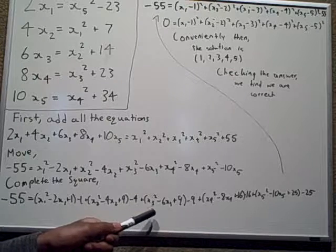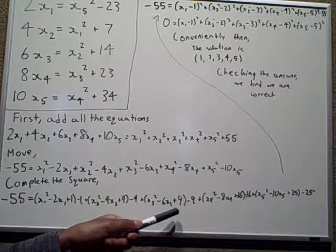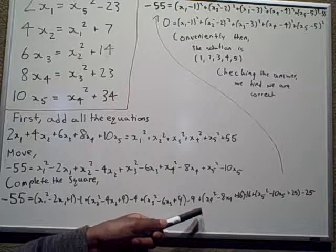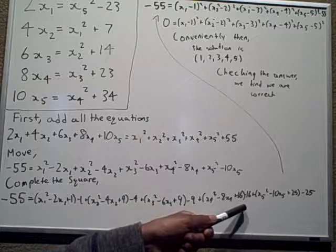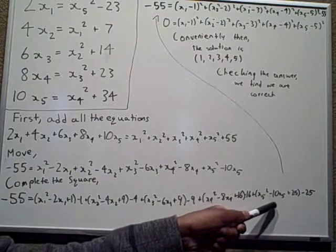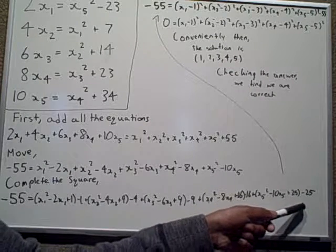x3 squared minus 6x3 plus 9 minus 9, x4 squared minus 8x4 plus 16 minus 16, x5 squared minus 10x5 plus 25 minus 25.